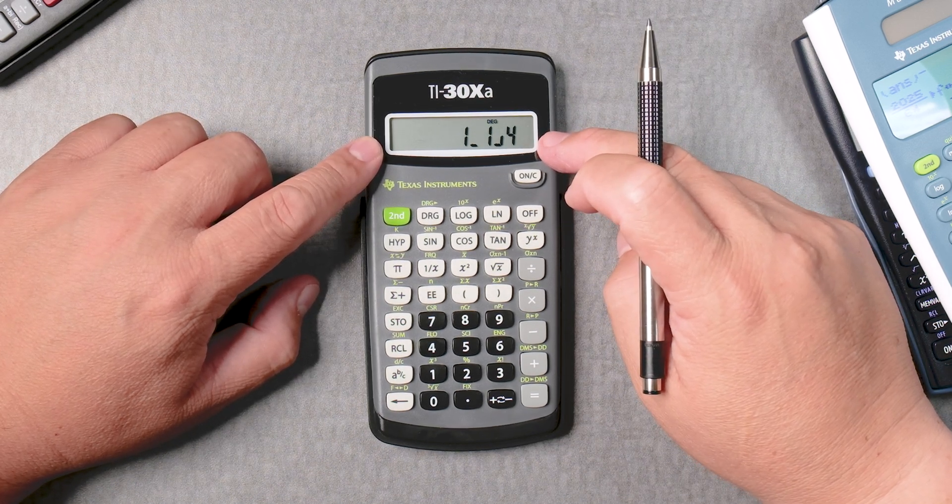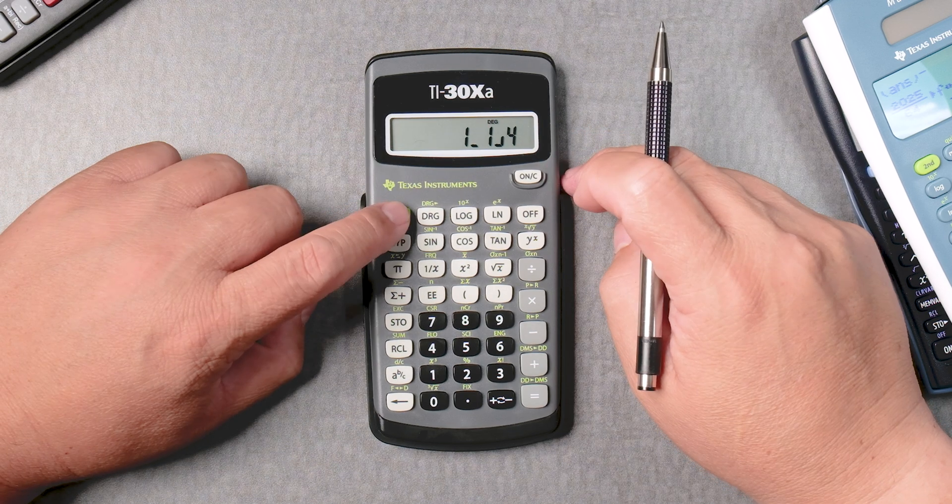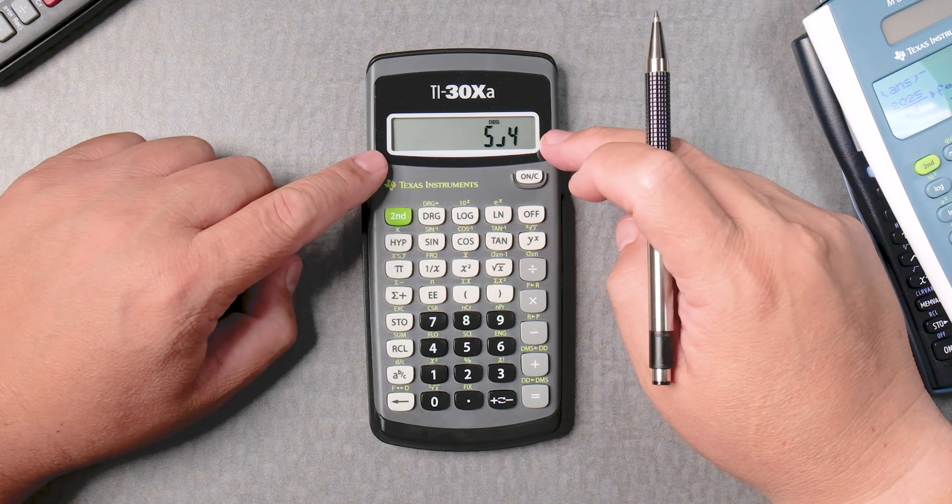Let's say I want this to be a mixed number, easy, second ABC gives you 5 over 4.